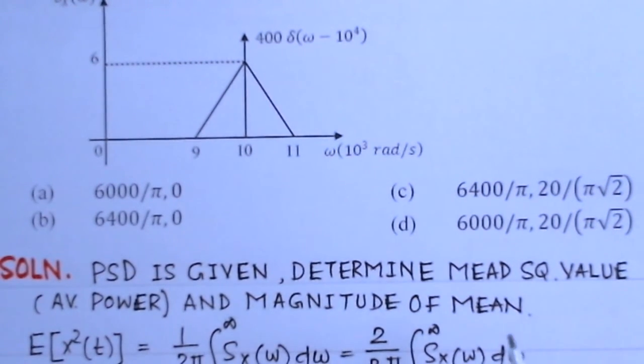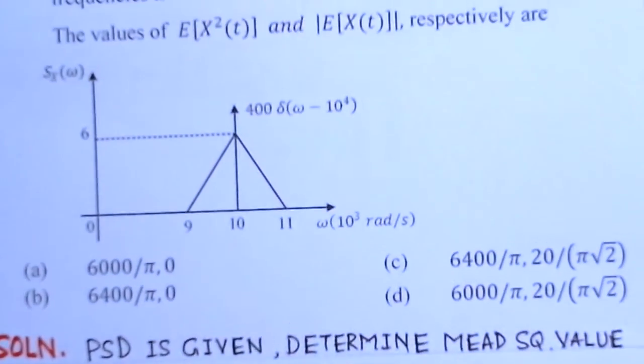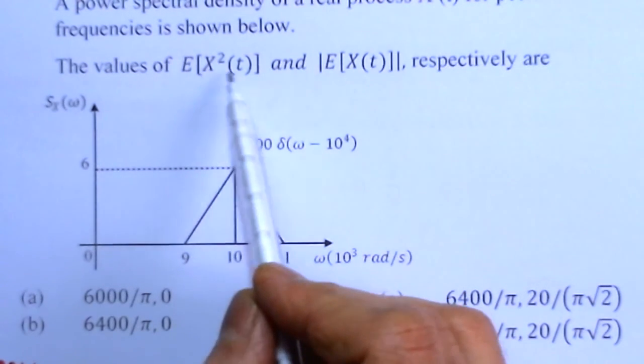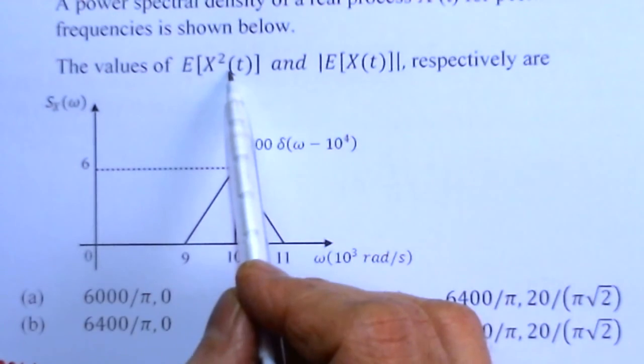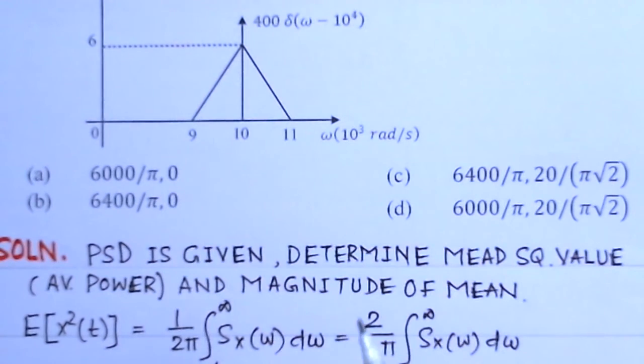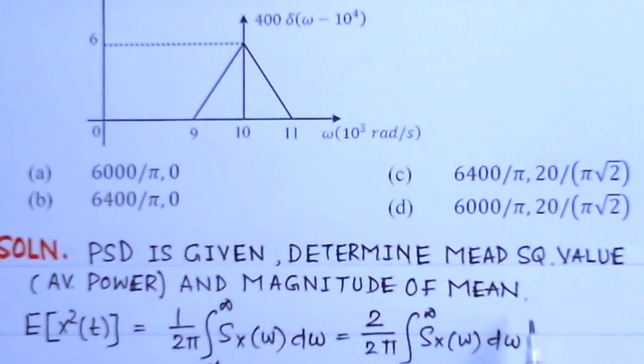PSD is given, we have to determine the mean square value E[X²(t)]. This is the mean square value, which is also the average power. The other part we need to determine is the magnitude of the mean.